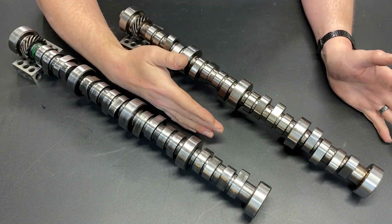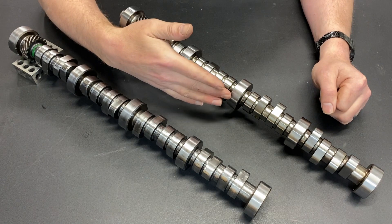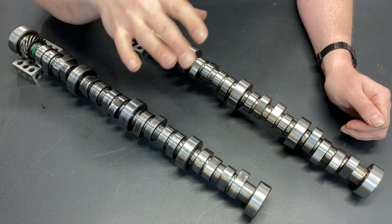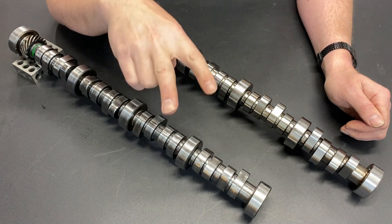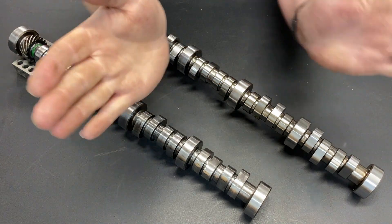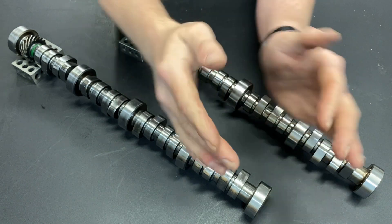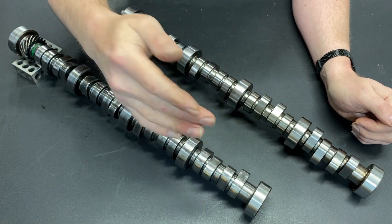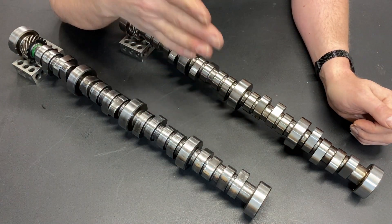The next specs, we're familiar with all these. You have duration and lobe separation angle. Now, lobe separation angle has to do with two things. Basically, the closer the exhaust and intake valve are in their opening, the rougher your idle is going to be.